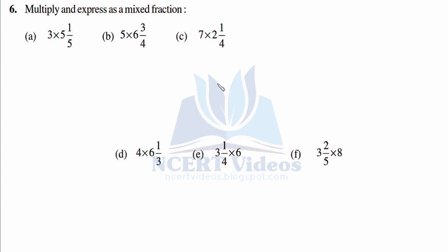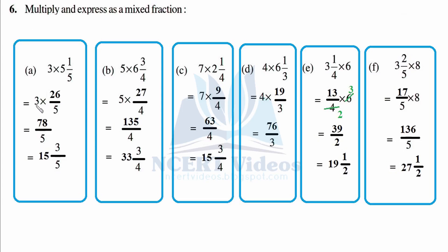Question number six: multiply and express as a mixed fraction. First: three times (5 and 1/5) — open it: five fives are twenty-five plus one is twenty-six over five. Multiply: six threes are eighteen, remainder three — seven over one... giving seventy-eight over five. As a mixed fraction: five fifteens are seventy-five, remainder three — answer is fifteen and three over five. Part B: five times (6 and 3/4) — open: six four is twenty-four plus three is twenty-seven over four. Multiply: seven times five is thirty-five, giving one hundred thirty-five over four.